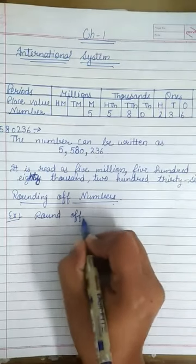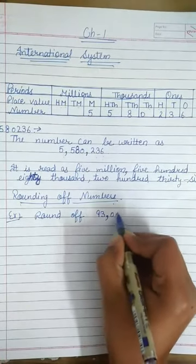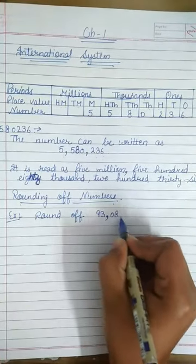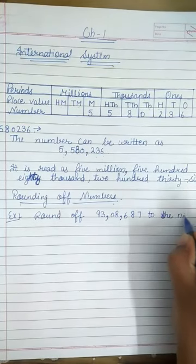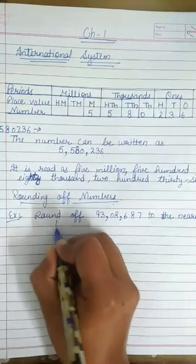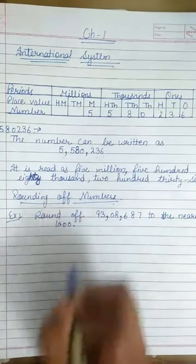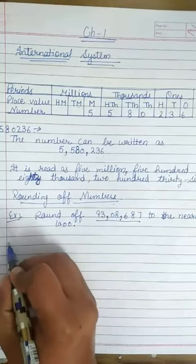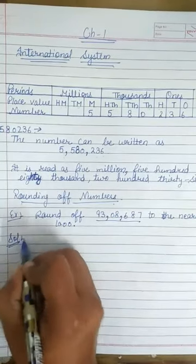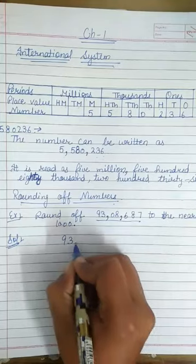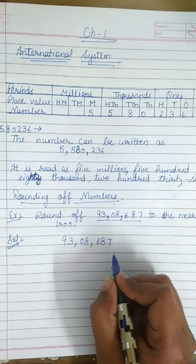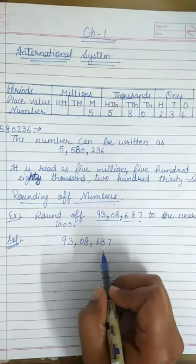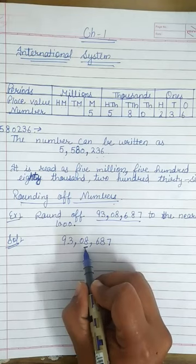Round off 93,8,687 to the nearest thousand. For rounding of this number, we have to follow some rules. First of all, check the number at the thousand place. 8 is at the thousand place.